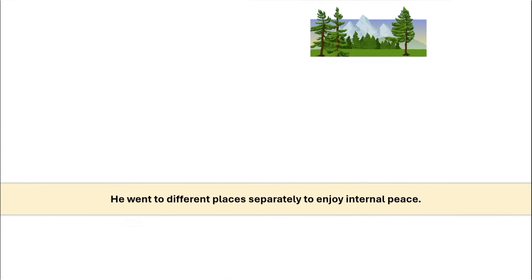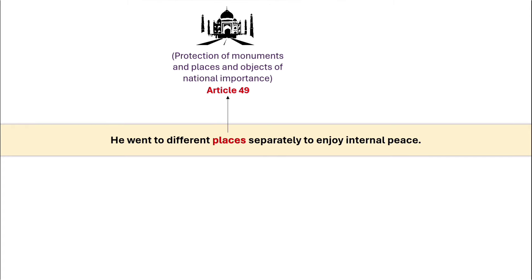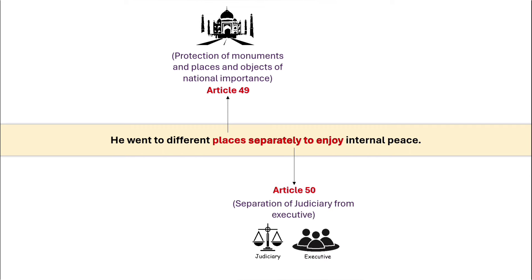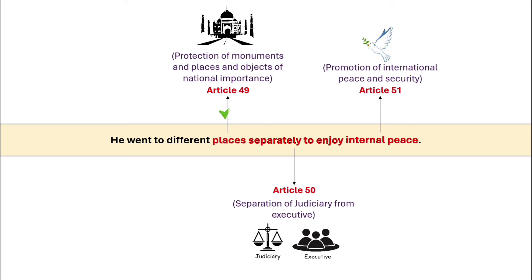The last statement of our story is: after doing all these things, he went to different places separately to enjoy internal peace. 'Places' denotes Article 49 — protection of monuments and places and objects of national importance. 'Separately to enjoy' denotes Article 50 — separation of judiciary from executive. And 'internal peace' denotes Article 51 — promotion of international peace and security. This last statement covers three articles: 49, 50, and 51.